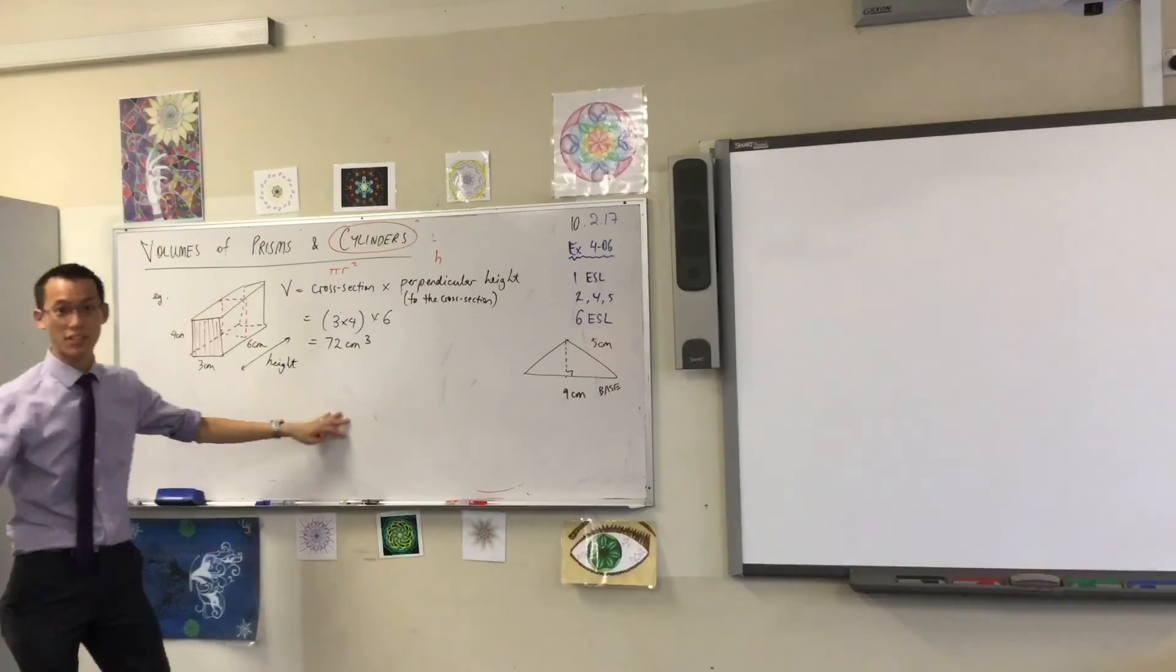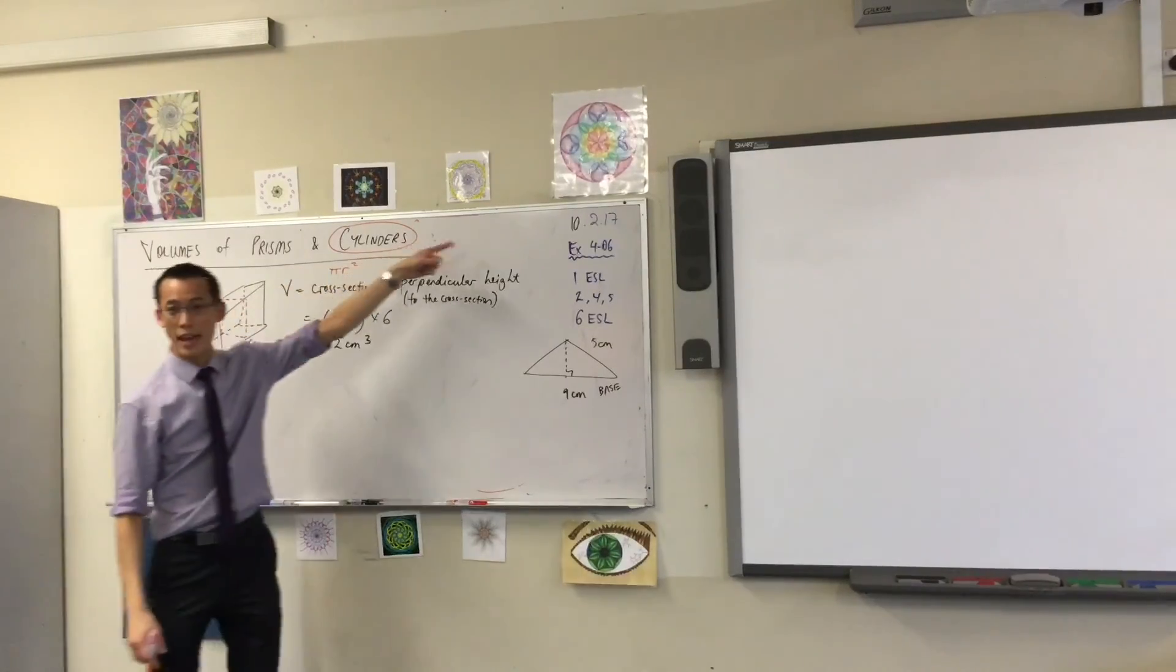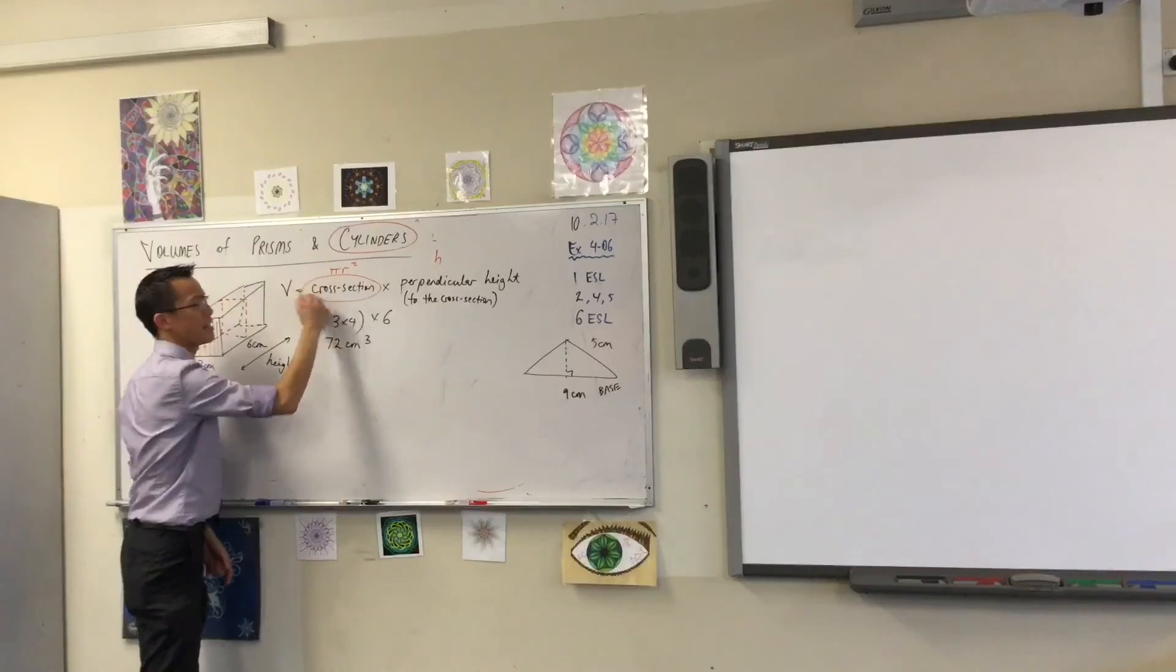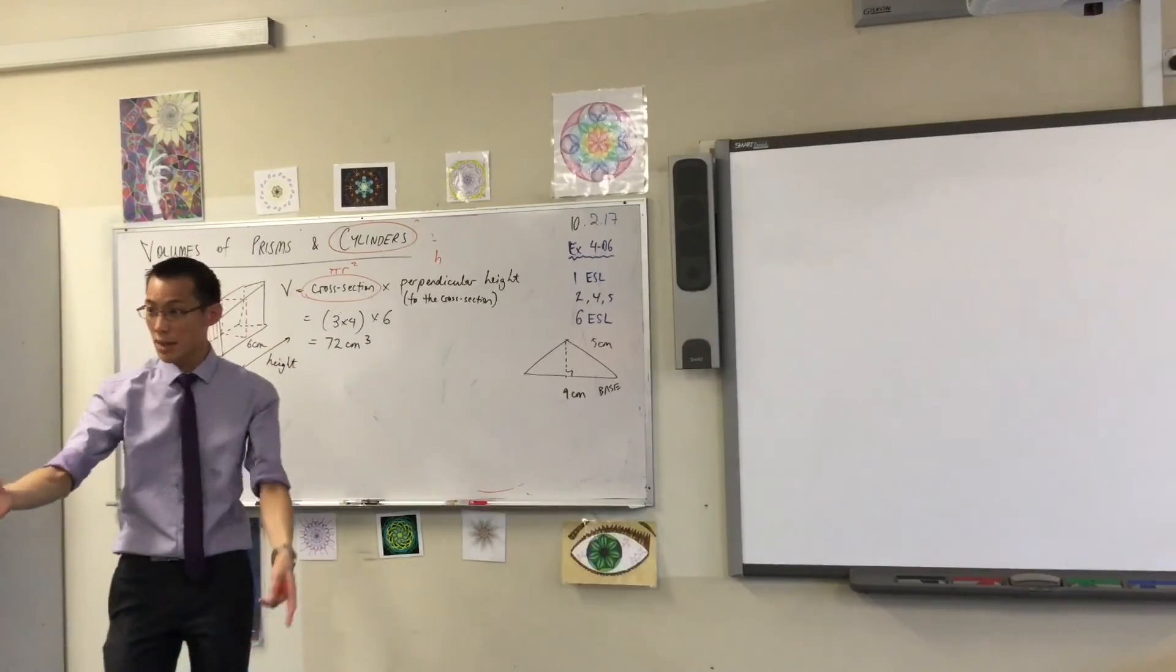Which is why the volume of a cylinder is pi r squared h, or whatever it is, times h. Does that make sense? Yes.